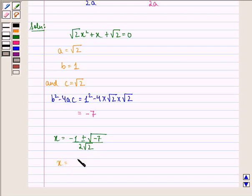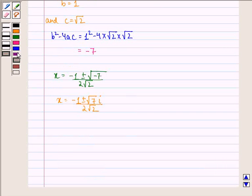x = (-1 ± √7i) / 2√2. Therefore, our answer to this question is (-1 ± √7i) / 2√2.